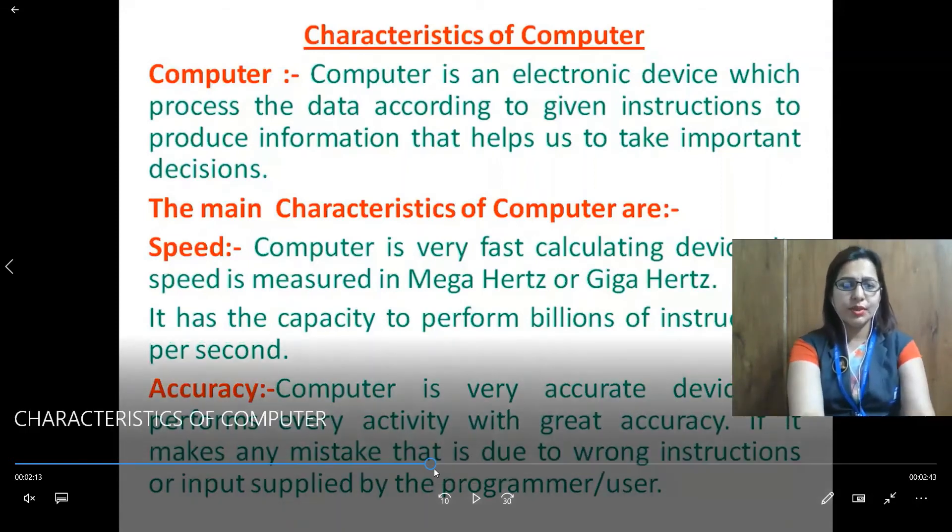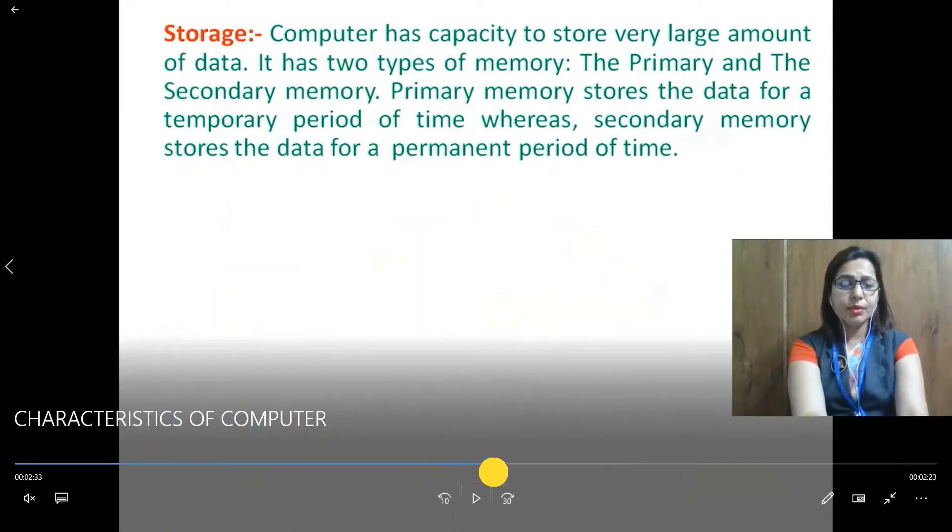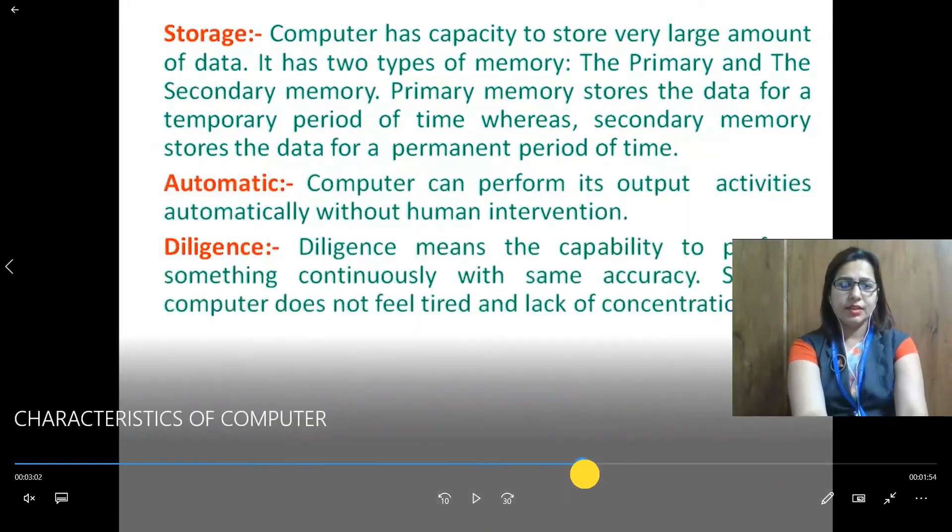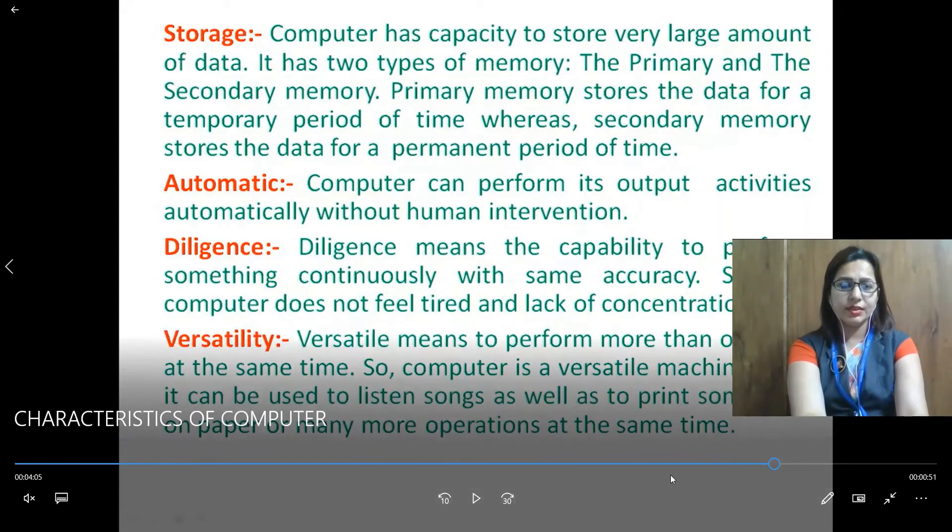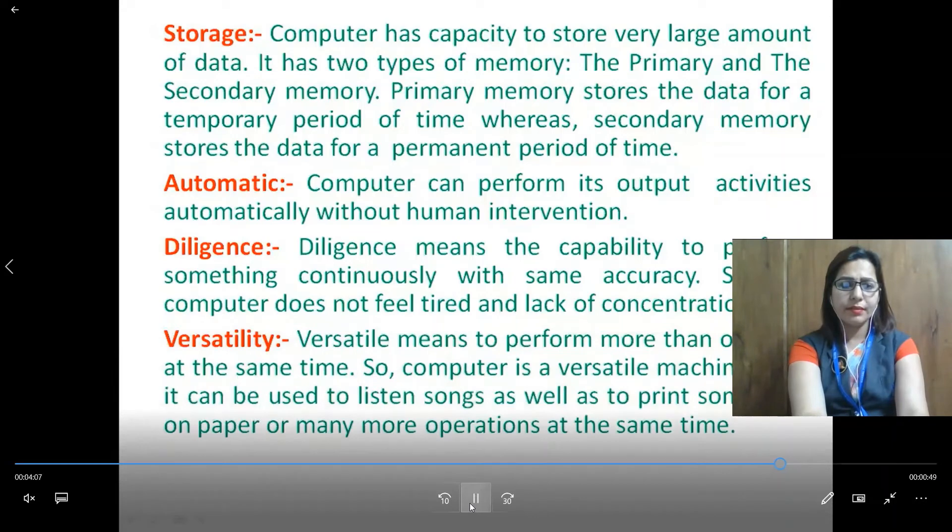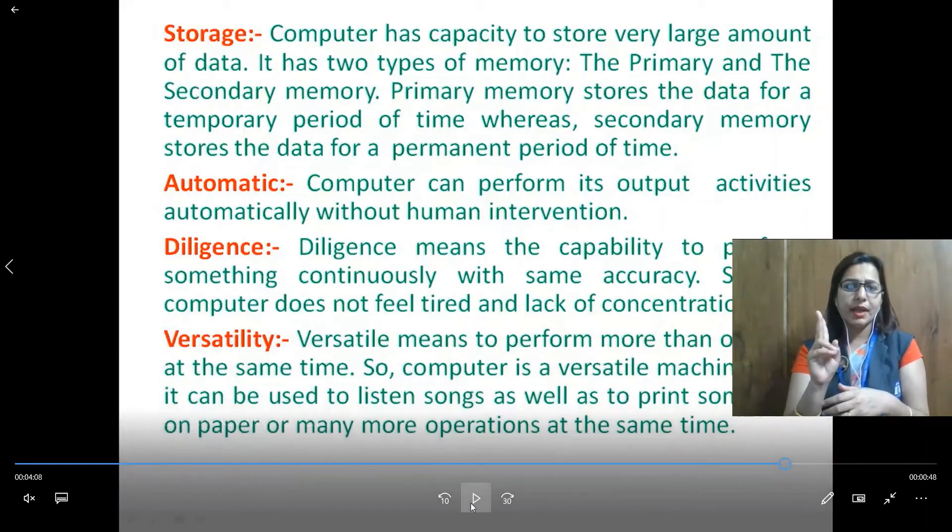Next is storage capacity of computer system. Computer has two types of memory to store things. You know all the things, that types of memory you have read in earlier classes: RAM, ROM, primary memory, secondary memory. These all are types of memory. Two types of memory: primary and secondary.